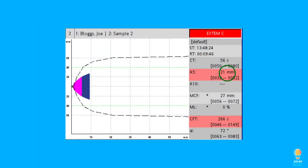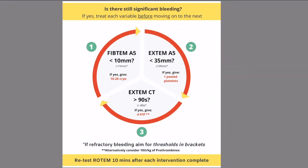Here, our threshold is 35mm, so if the XTem A5 is less than 35, give a pool of platelets and recheck your rotom.